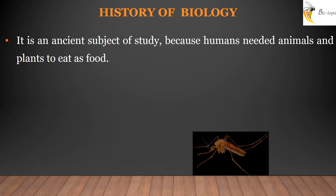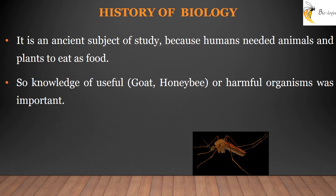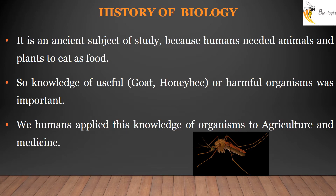They also study why a particular organism is present at a particular place and not somewhere else. Studying plants and animals was very important to our ancestors because they needed to understand the difference between useful and harmful organisms. This knowledge was later applied to other fields of science like agriculture and medicine, opening a new era in the field of biology.